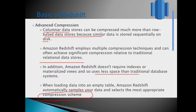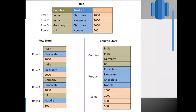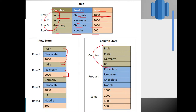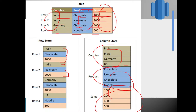For example, in row storage: India, Chocolate, 1000; India, Ice Cream, 2000; Germany, Chocolate, 4000; US, Noodles, 500 — all stored line by line. But in Redshift, the country column is stored together, the product column together, the sales column together — making processing much faster.